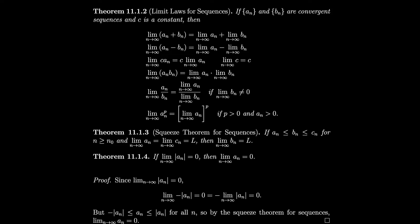Similar to limits in general, we have limit laws for sequences. If sequences are convergent, the limit of a sum is the sum of the limits; same for differences. We can pull a constant out of a limit, and the limit of a constant is itself. The limit of a product is the product of the limits; the limit of a quotient is the quotient of the limits, provided the denominator limit is nonzero. We also have the squeeze theorem: if bn is sandwiched between an and cn, and lim an = lim cn = L, then lim bn = L.